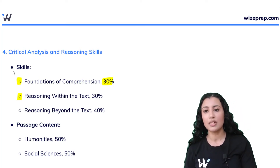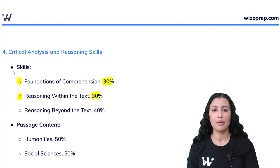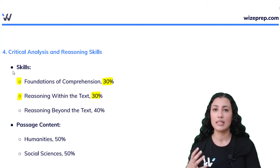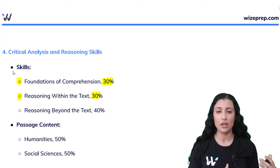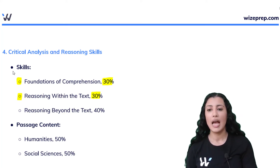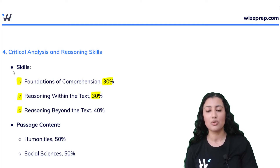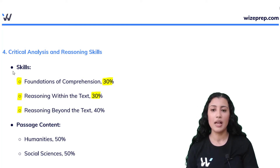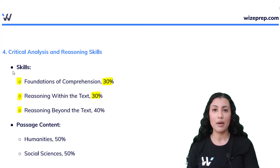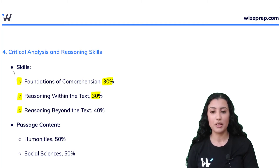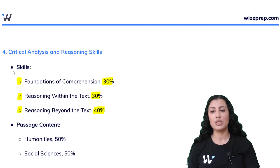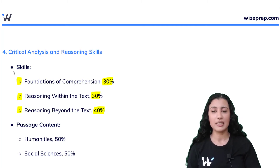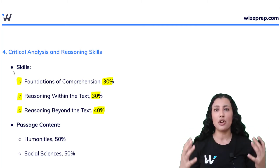The next skill is reasoning within the text, which makes up 30%. This might be something explicitly stated in the passage that you then have to reason from in certain questions. Then there's reasoning beyond the text — students mostly struggle with this part. I really struggled with it when I was writing the MCAT, and this makes up 40% of CARS.